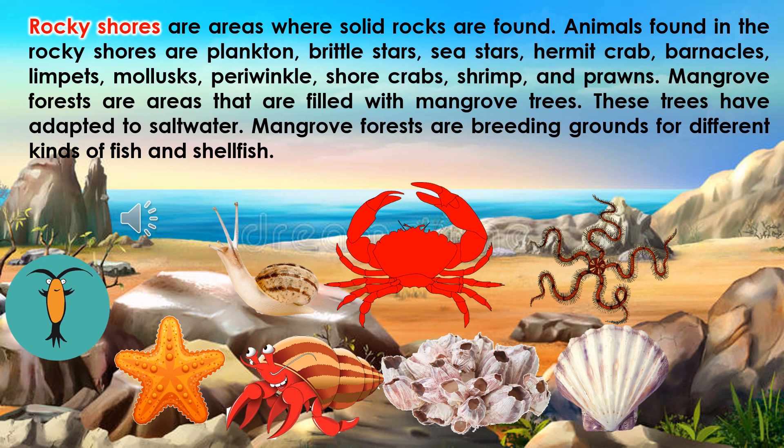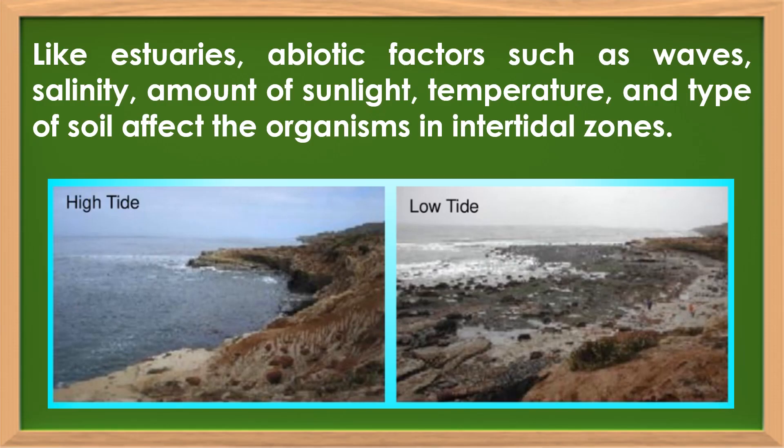Mangrove forests are areas that are filled with mangrove trees. These trees have adapted to salt water. Mangrove forests are breeding grounds for different kinds of fish and shellfish. Like estuaries, abiotic factors such as waves, salinity, amount of sunlight, temperature, and type of soil affect the organisms in intertidal zones.